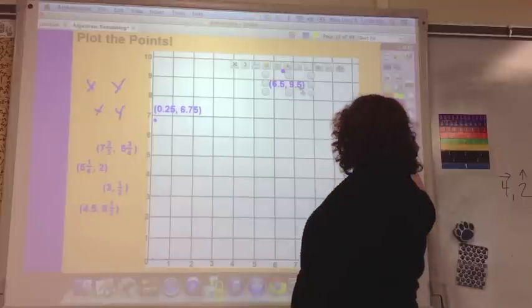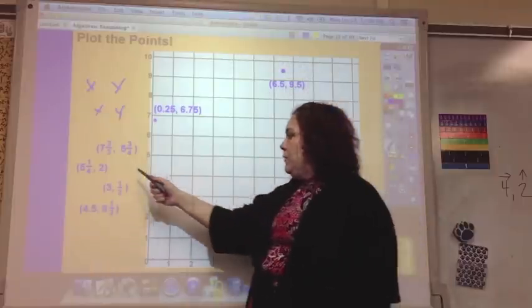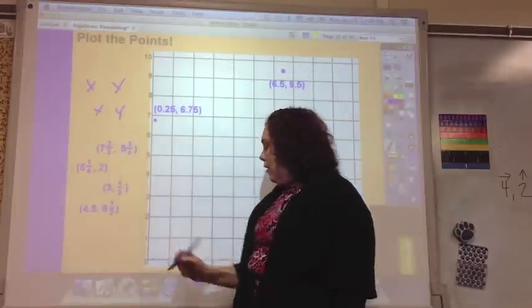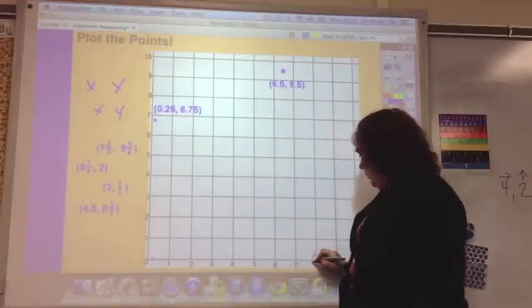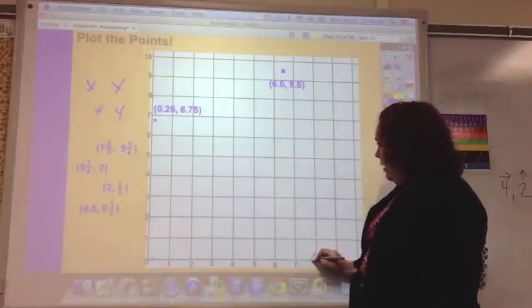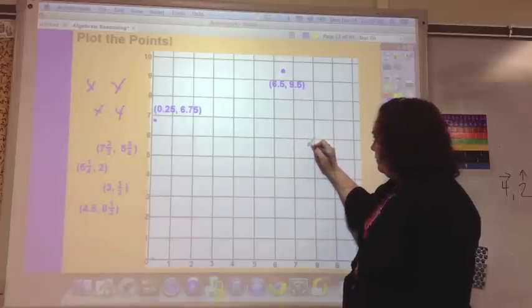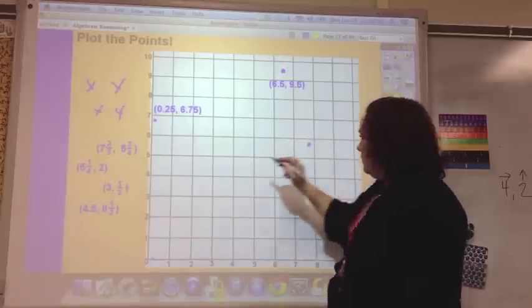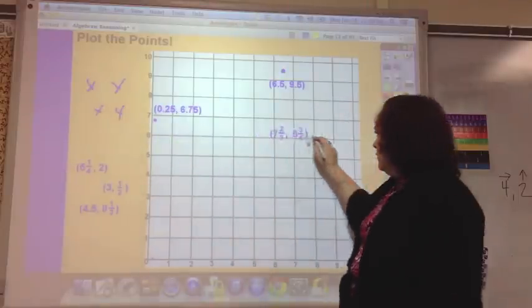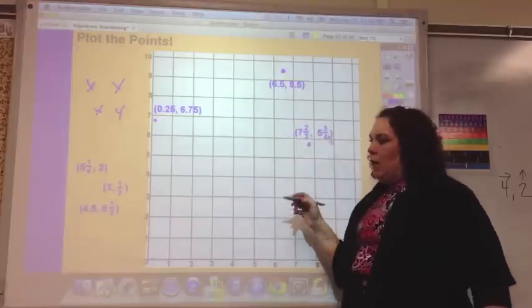And then 7 and two-thirds. Two-thirds is almost close to a whole, so that would be almost 8. And then up 5 and three-fourths. There's 5 and then three-fourths.